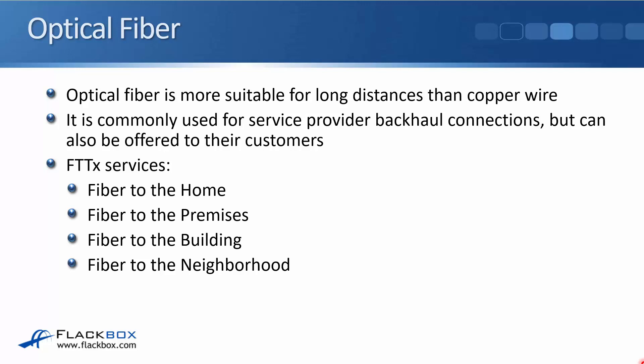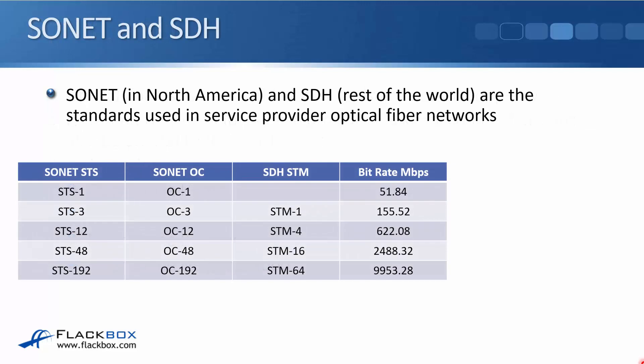Optical fiber is more suitable for long distances than copper wire and it's commonly used for service provider backhaul connections — meaning the connections between a service provider's main locations — which are internal to the service provider and require a lot of bandwidth. But optical fiber services can also be offered to the service provider's customers. In North America you'll often see this described as FTTX services: fiber to the home, to the premises, the building, and the neighborhood. SONET in North America and SDH in the rest of the world are the standards used in service provider optical fiber networks.